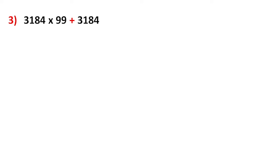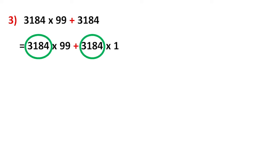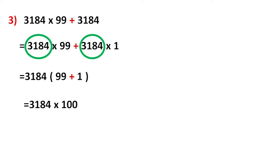Next example is 3,184×99 + 3,184. The first term is 3,184×99 and the second term is 3,184 only. 3,184 is common, but from the second term we cannot take any number outside. So we rewrite the equation as 3,184×99 + 3,184×1, since any number multiplied by 1 is the same number. Now 3,184 is common; remaining numbers are 99 + 1 = 100. So 3,184×100 = 3,18,400.